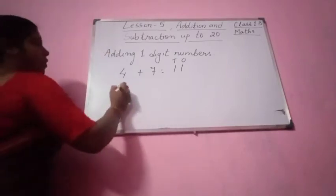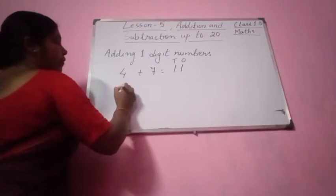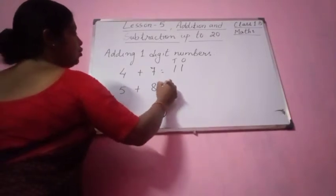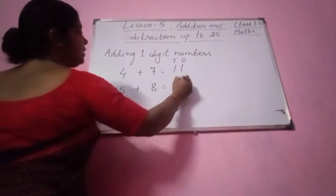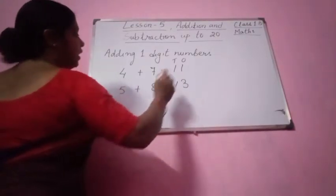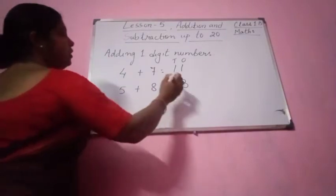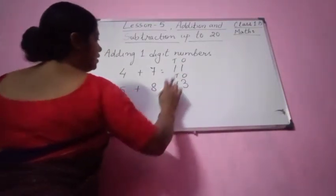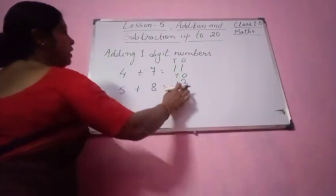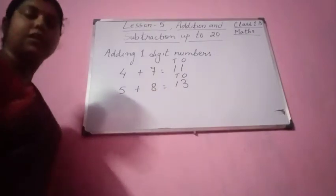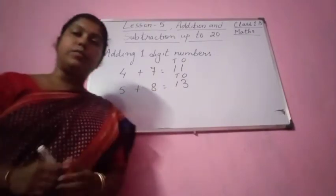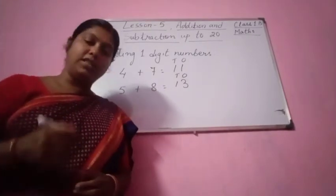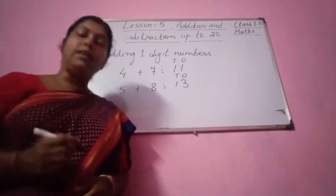Next one: 5 plus 8. So 5 plus 8 equal to 13. Now you can see here also you can make 1s and 10s — 1 ten and 3 ones. So in this way you can add one digit numbers.